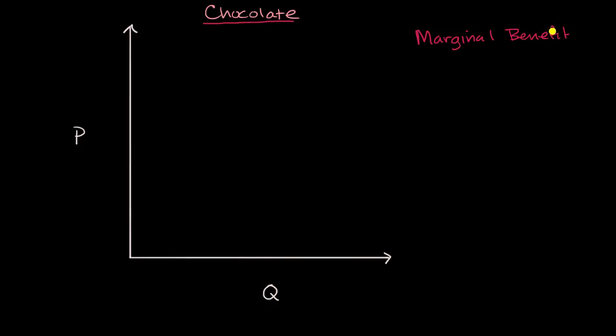Marginal benefit — when we're talking about margin, it's really thinking about what happens on the increment. What happens for each little extra that you do? This is saying: what is the benefit that I get if I get a little bit more of, in this case, chocolate?